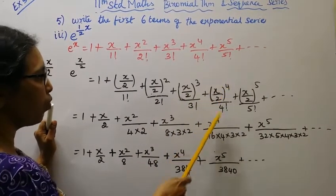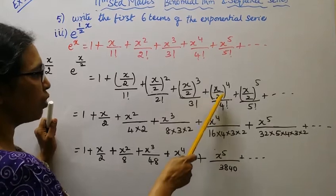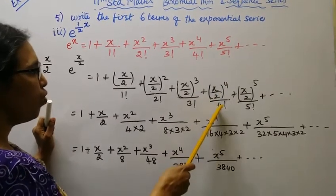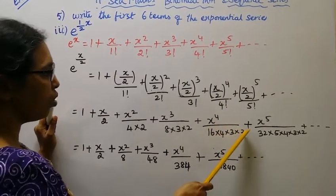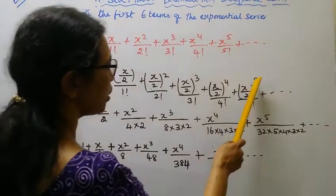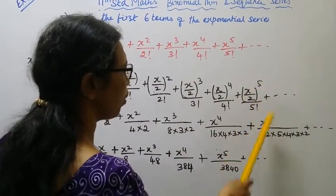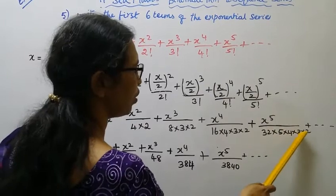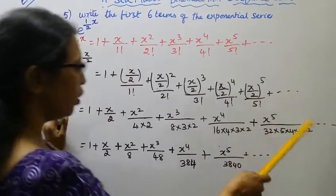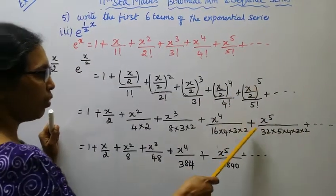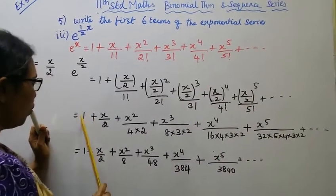x power 4, 2 power 4 is 16, by 4 factorial, 4 into 3 into 2 into 1, plus x power 5 by 2 power 5, 32, by 5 factorial, 5 into 4 into 3 into 2 into 1.